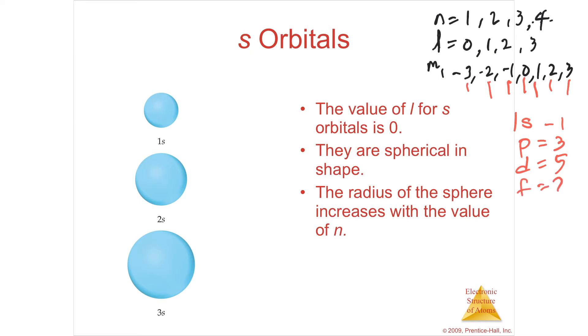So the number of rooms that you have in the subshell, that's what your m sub l tells you about. There's one room in the s subshell, one orbital. There's three orbitals in the p subshell. There's five orbitals in the d, and there's seven orbitals in the f.